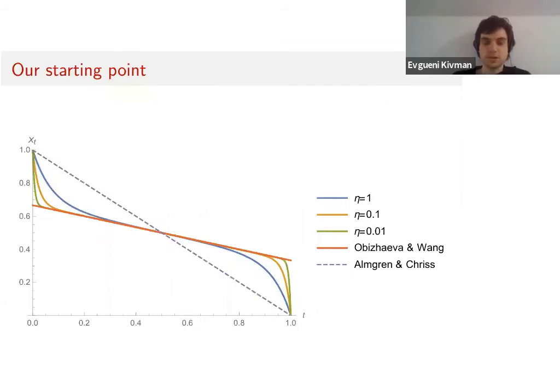Looking at simulations, this is a deterministic case. We have a comparison to the model of Obizhaeva and Wang that introduced this model with transient price impact but without instantaneous price impact. It's intuitive that if instantaneous price impact disappears, we come close to this model.